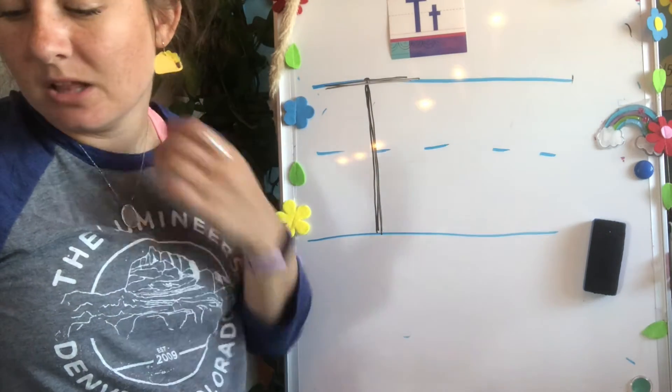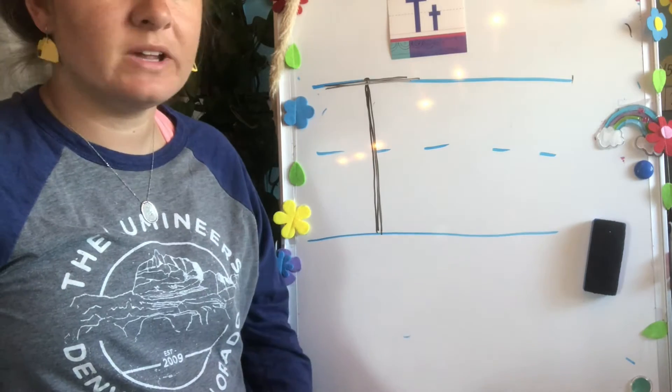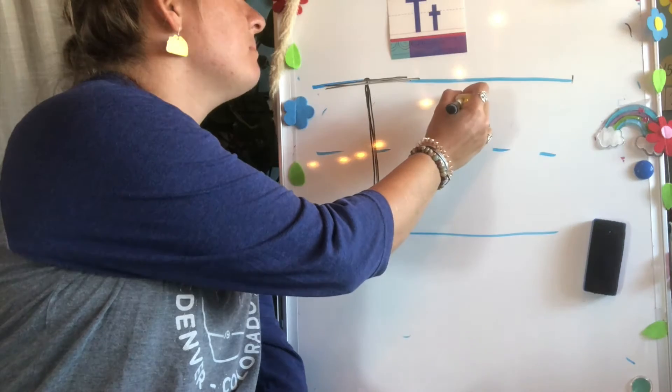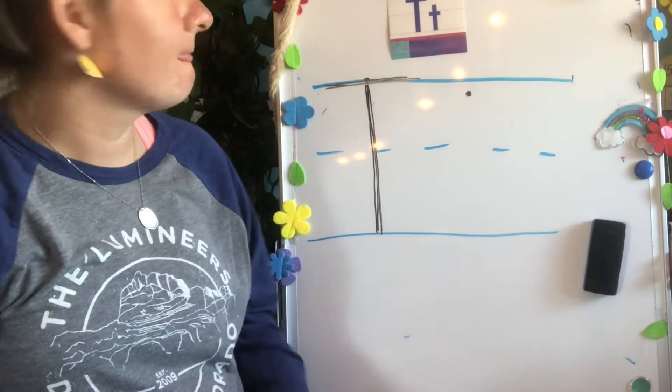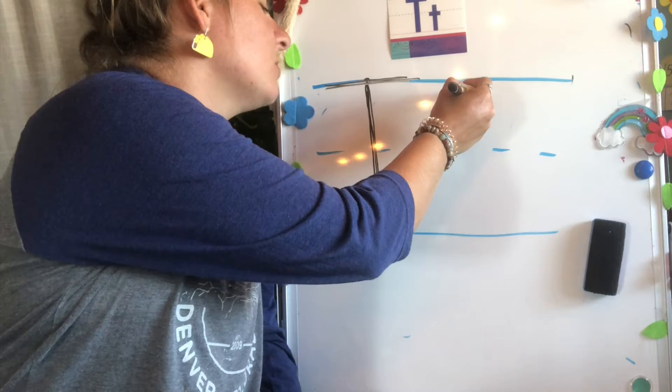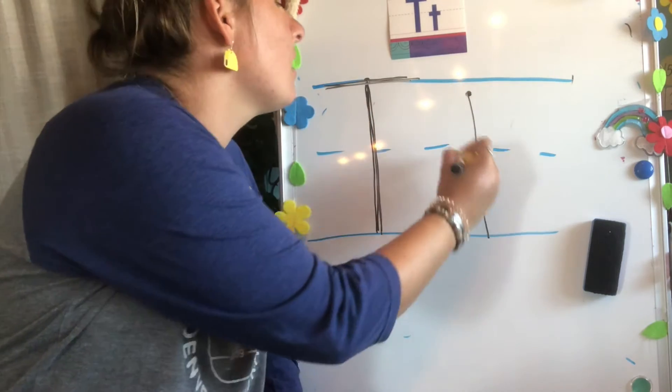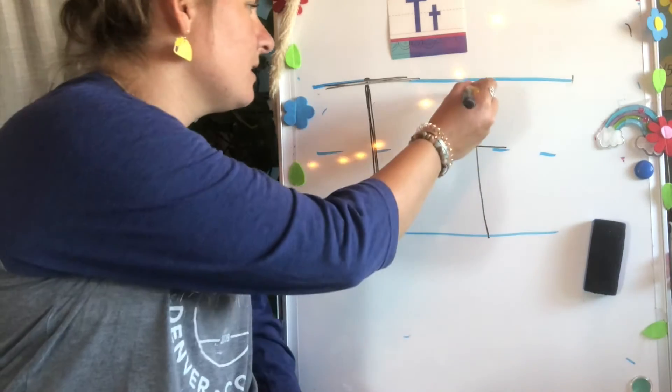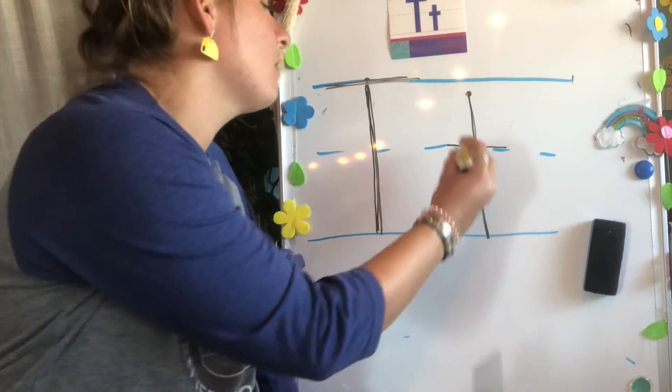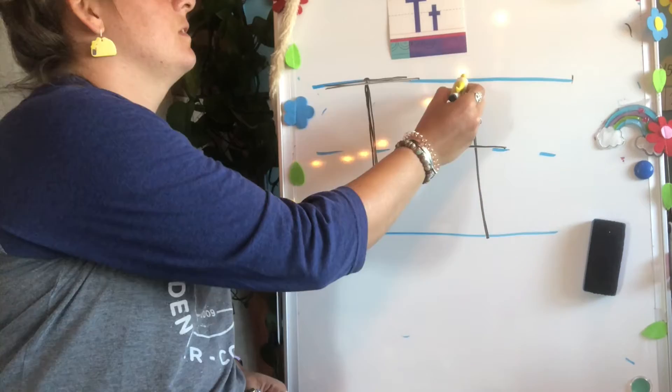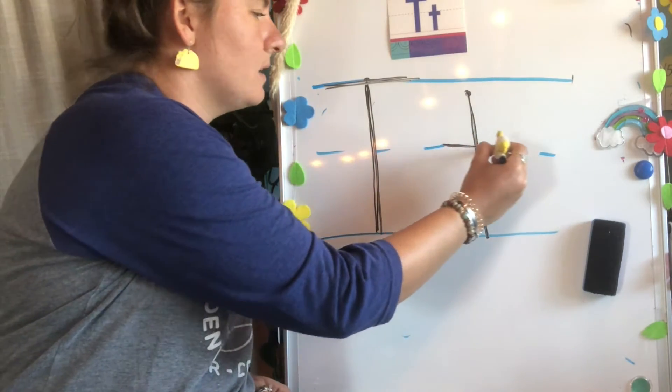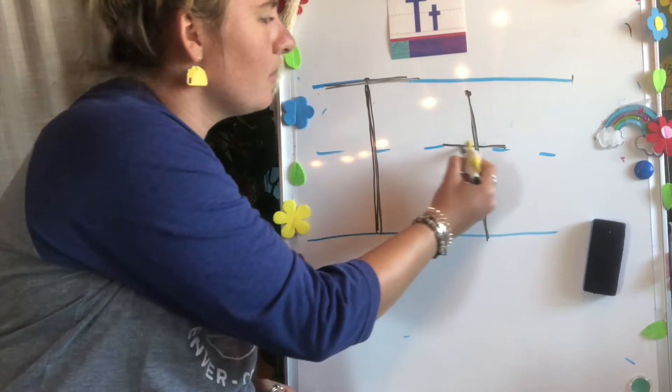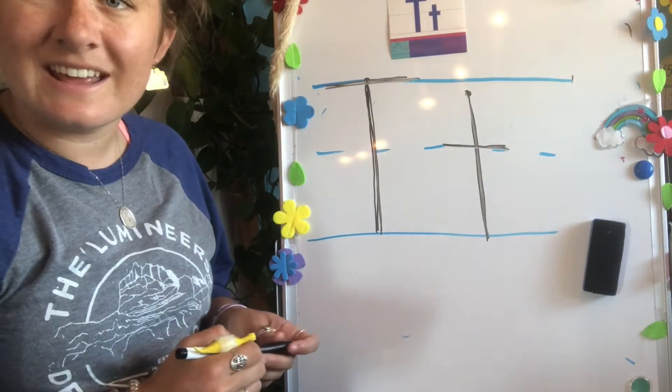Now it's time to make the lowercase T. To make the lowercase T, we're going to start a little bit below that top line. And we are going to go down, across on the middle line. Can you try that? Down, across. Down, across on the middle line. One more time. Down, across. There you go. You did it.